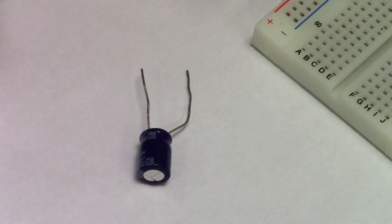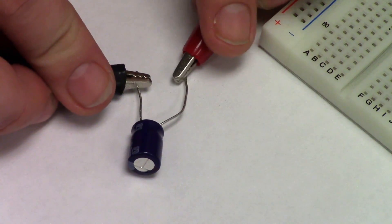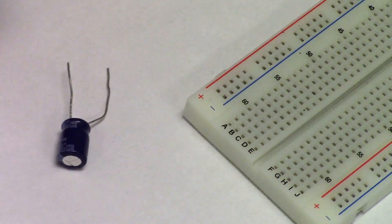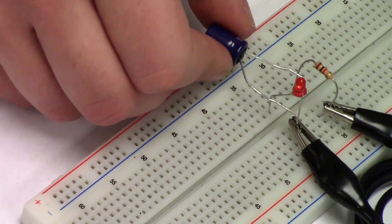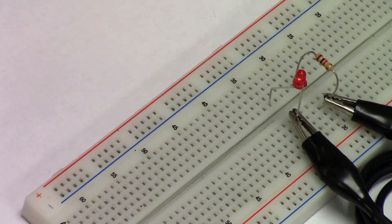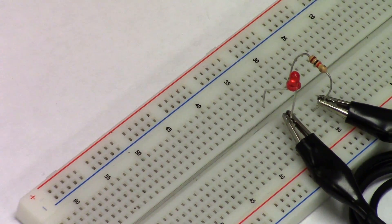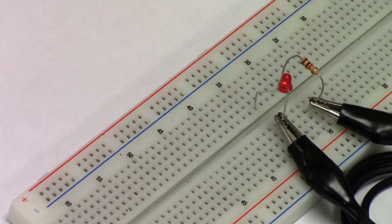Now, we're going to charge the capacitor by connecting it to the power source. When we touch the capacitor to the LED, the LED lights up. Notice how the LED fades out. This is because the resistor keeps all the charge from the capacitor from flowing through the LED at once.